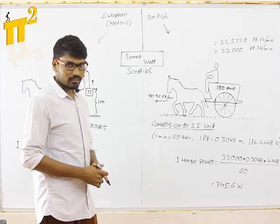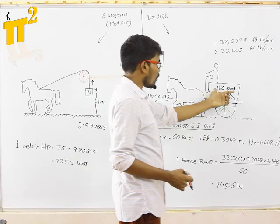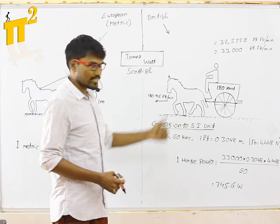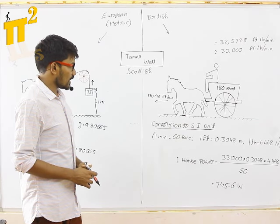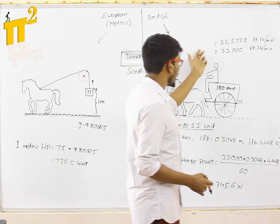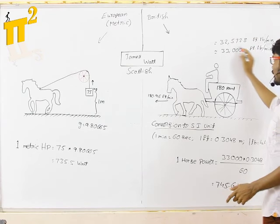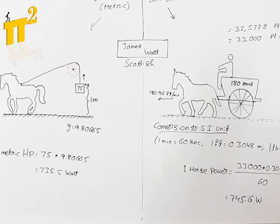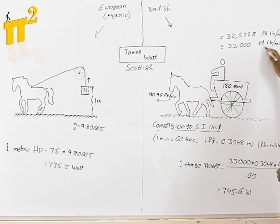So he compared his engine with the horse which is carrying 180 pounds at a speed of 180.96 feet per minute. He said the power of a horse is equal to 180 into this speed, which turns out to be 32,572.8, and he rounded to 33,000 feet-pound per minute.